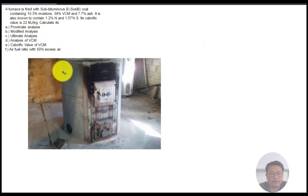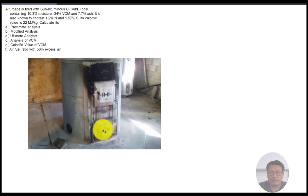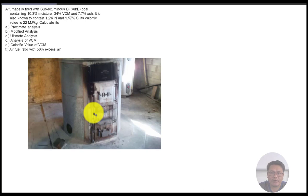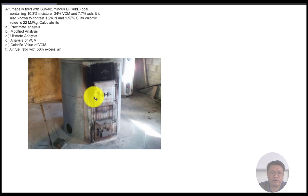In a typical household furnace, you put the coal inside and combustion takes place. This is a typical household furnace used for heating homes or spaces, usually in cold places like America or Europe. They have a boiler in a furnace inside their basement where coal or diesel is used to start combustion, and the heated air is used to boil water in the boiler and distribute heat throughout the household.